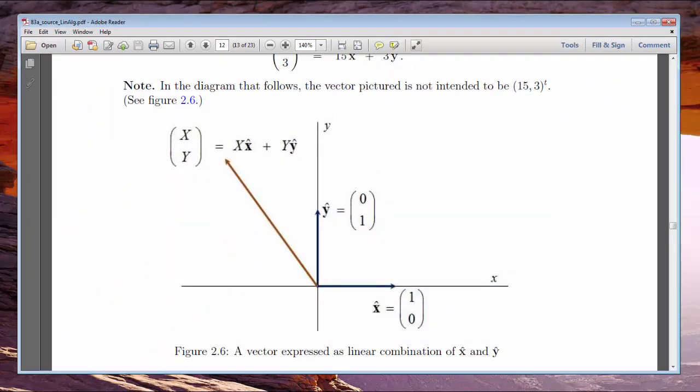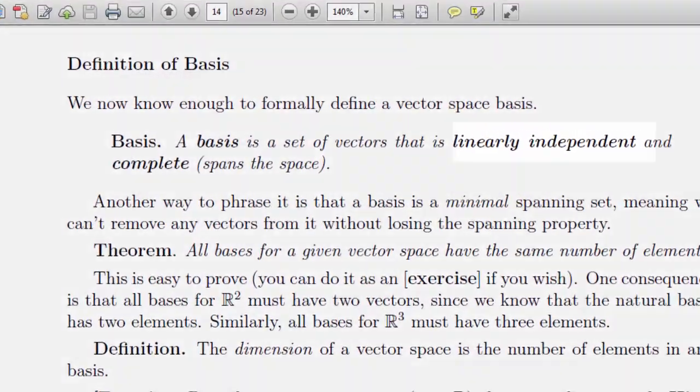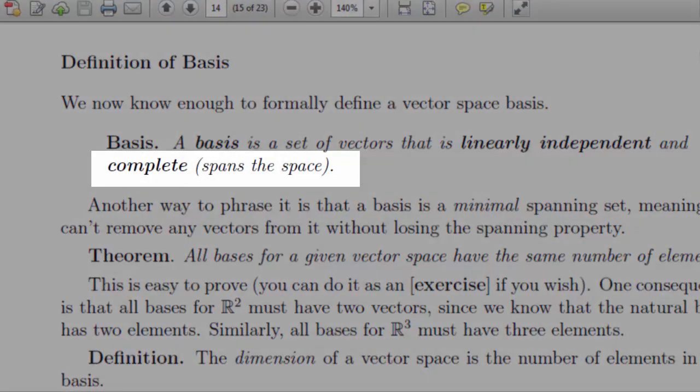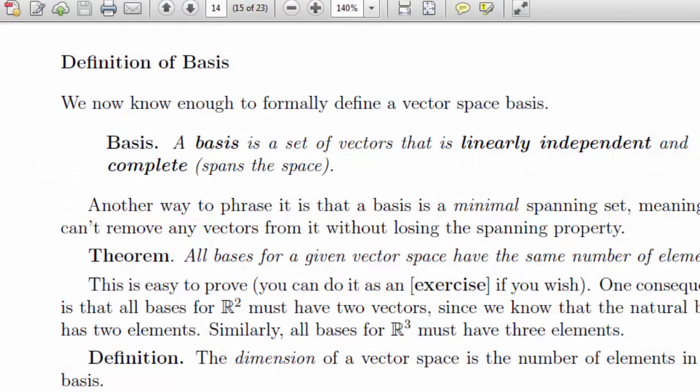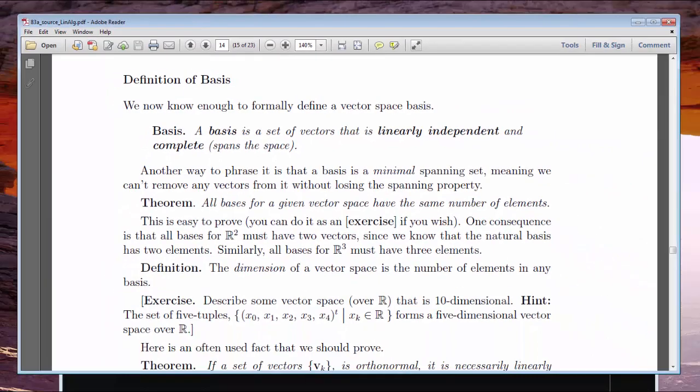In order for a set of vectors to be a basis, they have to satisfy two conditions. First, that they be linearly independent, and second, that they span the space. You may not know what those terms mean now, but you will in about an hour, and I'll show you how to test for those conditions.